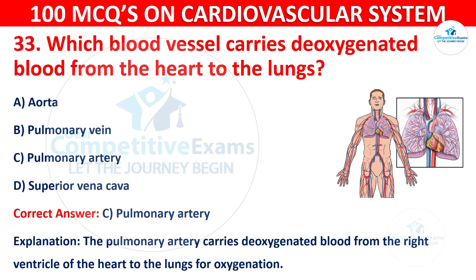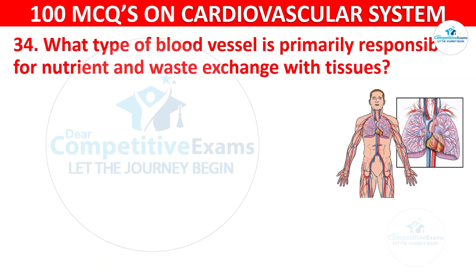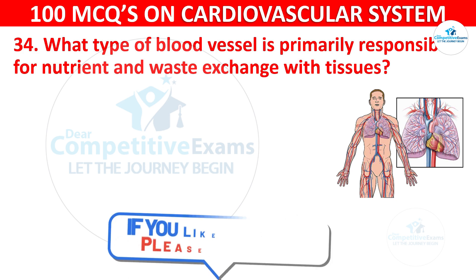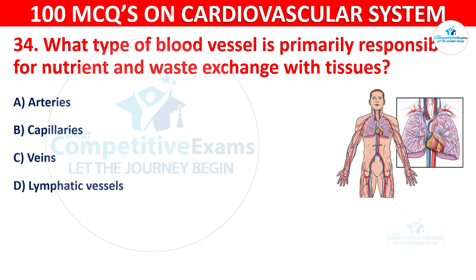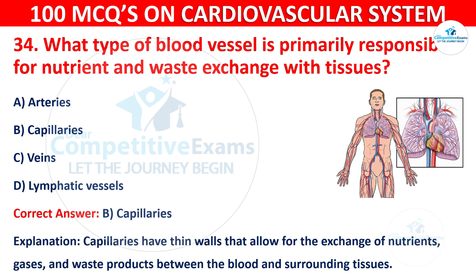Question 34: What type of blood vessel is primarily responsible for nutrient and waste exchange with tissues? Options are: Arteries, Capillaries, Veins, or Lymphatic vessels. The correct answer is B, Capillaries. Capillaries have thin walls that allow for the exchange of nutrients, gases, and waste products between the blood and surrounding tissues.